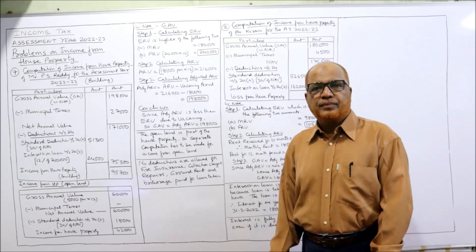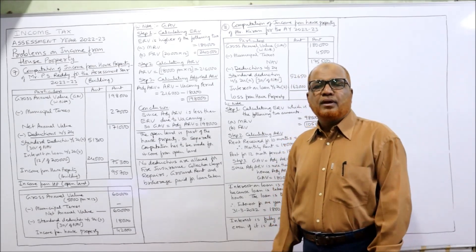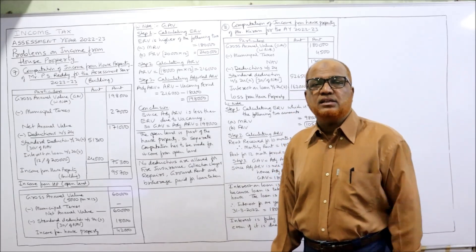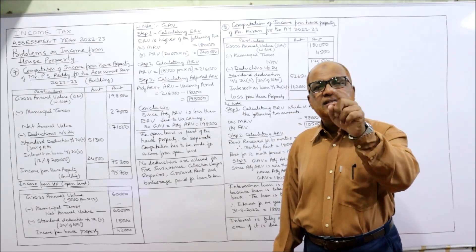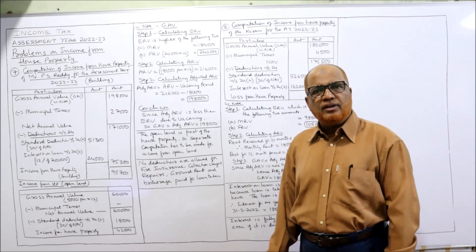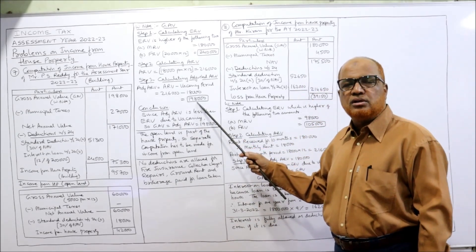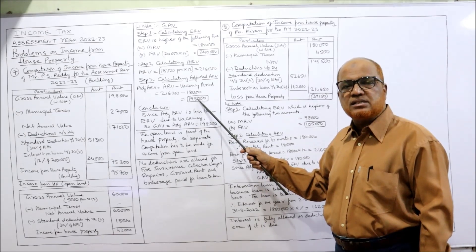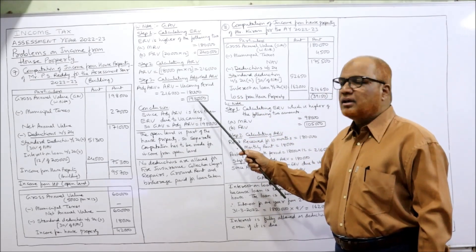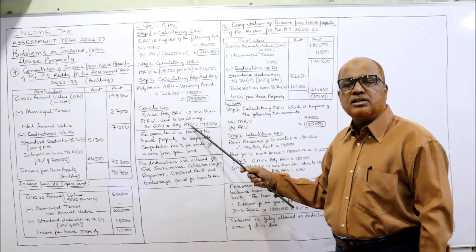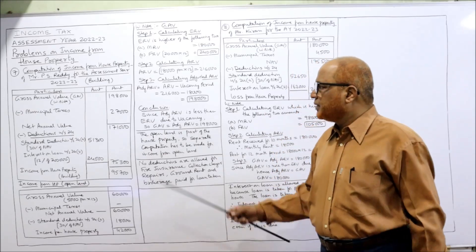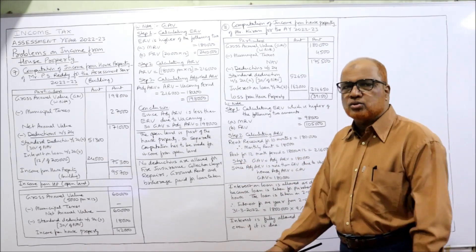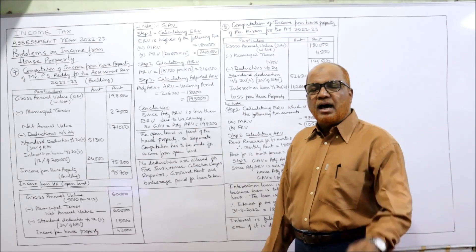Adjusted ARV = Actual ARV minus vacancy period rent. Actual ARV is 2,16,000; one month it was vacant so minus 18,000 — giving adjusted ARV of 1,98,000. Now the Income Tax rule states: if the adjusted ARV is less than ERV due to vacancy, then adjusted ARV is the GAV. Here adjusted ARV is 1,98,000 whereas ERV is 2,40,000, so adjusted ARV is less than ERV on account of vacancy. Therefore, GAV equals adjusted ARV, that is 1,98,000.